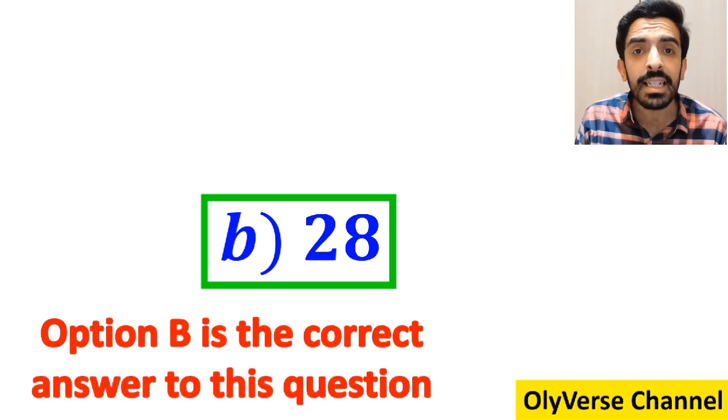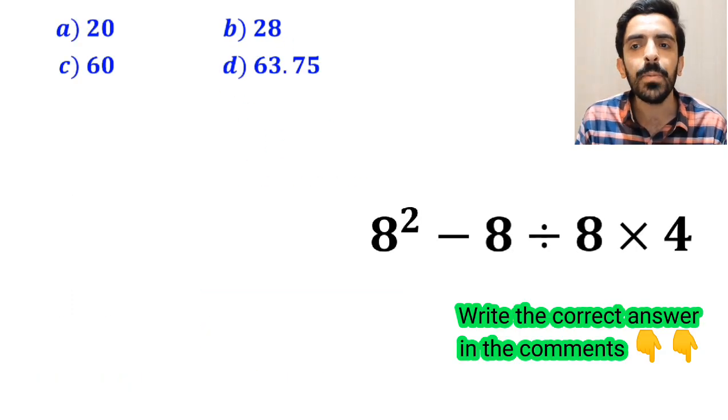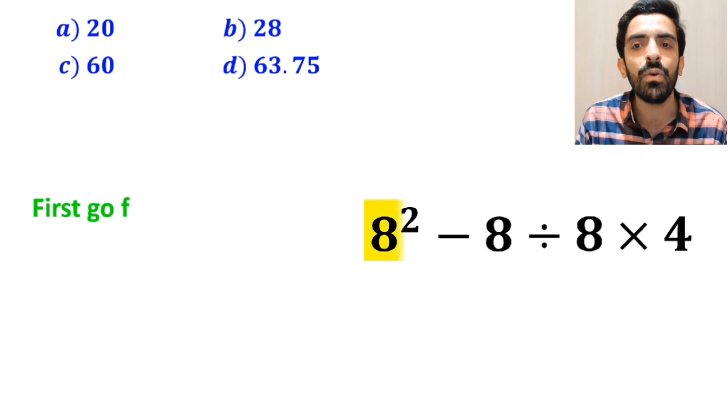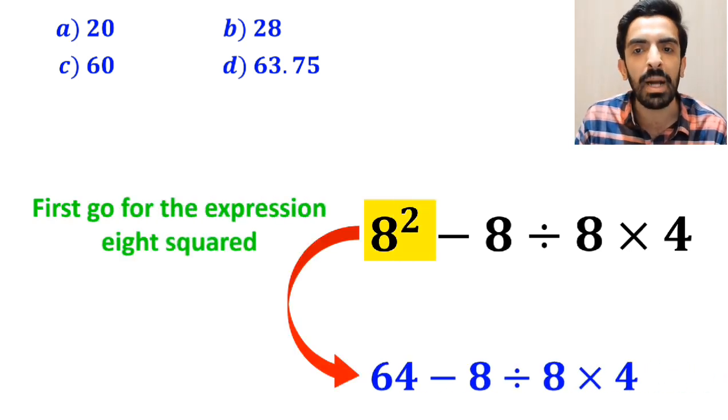However, this answer is absolutely wrong. Also, some other people to solve this problem first go for the expression 8 squared and they simplify it to 64 minus 8 divided by 8 then times 4.